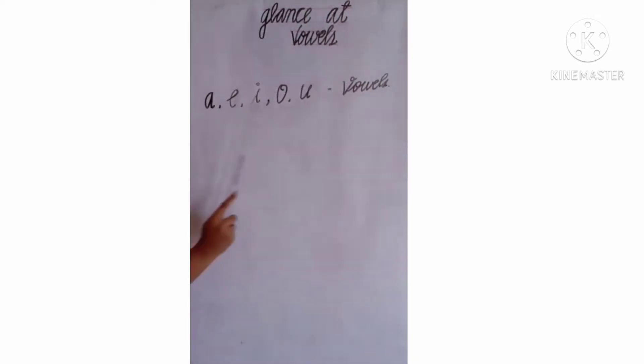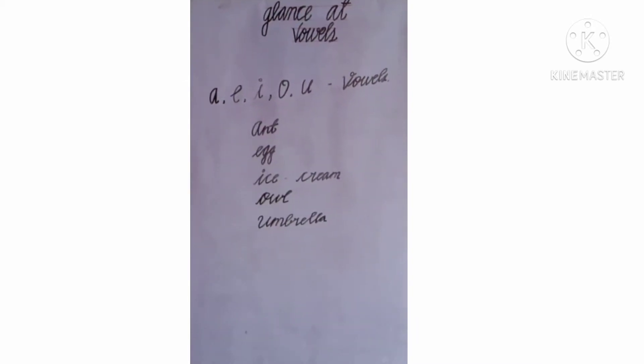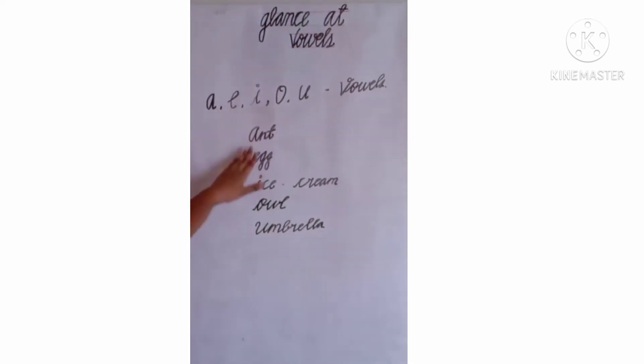So here we have five letters that is vowels and remaining 21 letters are considered as consonants. Now we will see what are the words that will come in front of the vowels with examples. Okay, now I have wrote many words using these vowels.